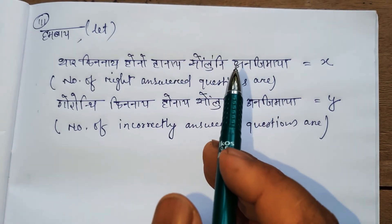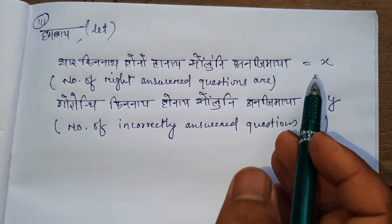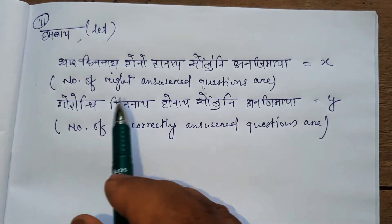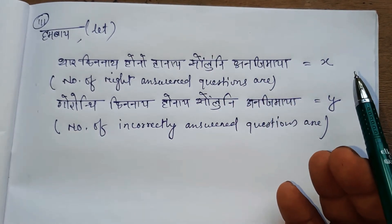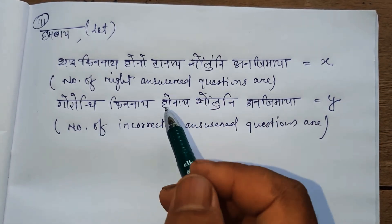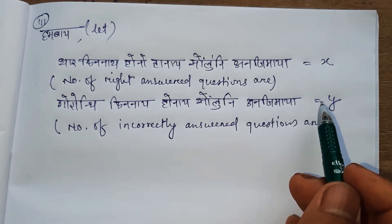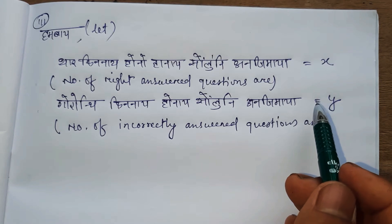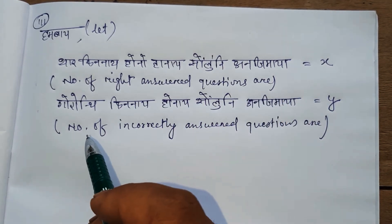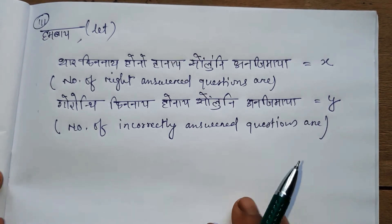Now let us define variables. Let x be the number of correctly answered questions and y be the number of incorrectly answered questions.